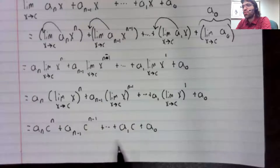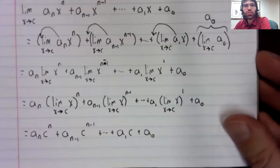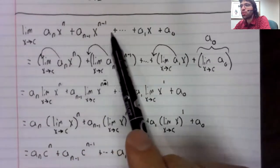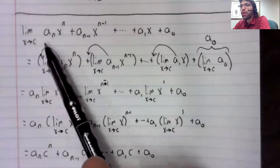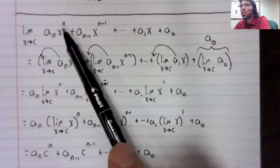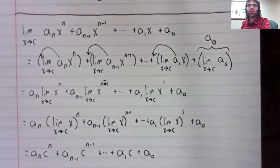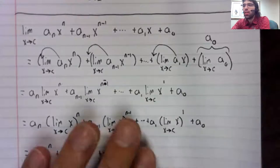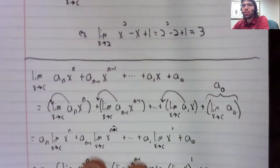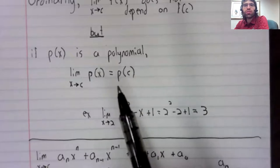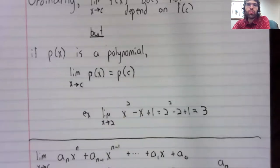And this limit is precisely what you get if you take this polynomial and plug c in for x. There's a corollary to this. We can use this rule to find limits of a second type of function.